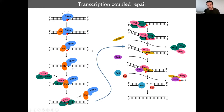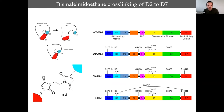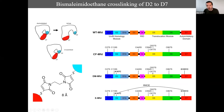At some point MFD recruits repair factors, then leaves with RNA polymerase, and the repair process continues as it would have done if initiated by the global NER pathway — cleavage by UvrC proteins, strand displacement by UvrD, and filling in by a DNA polymerase. We used cross-linking to determine at which of these steps the N- and C-terminal domains need to separate.